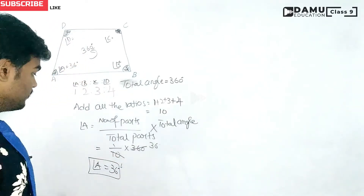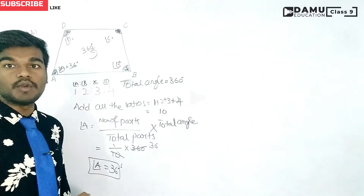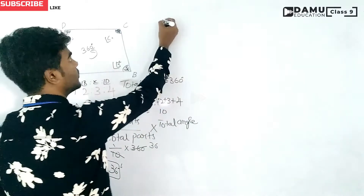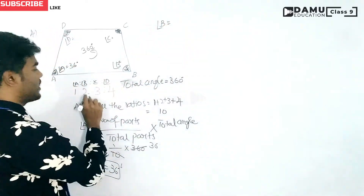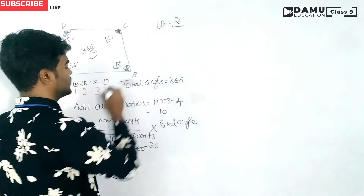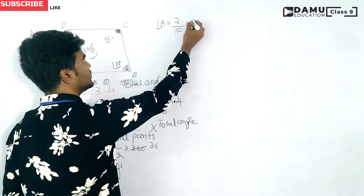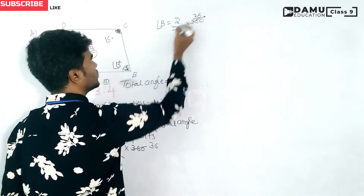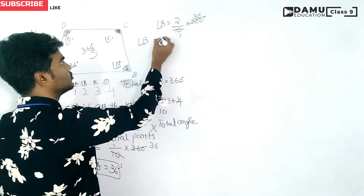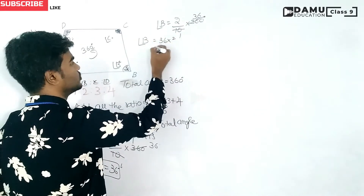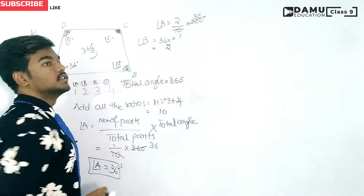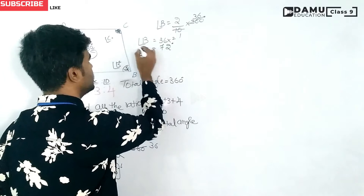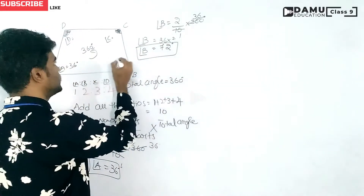For angle B, the number of parts is 2. So angle B equals 2 by 10 into 360. That gives 36 multiplied by 2, which equals 72 degrees.